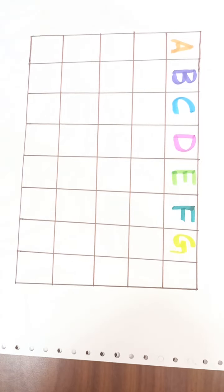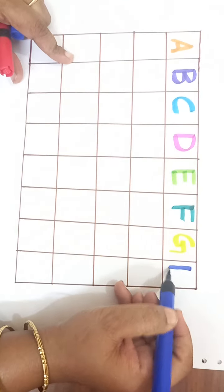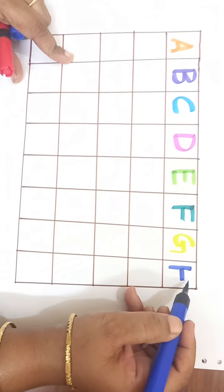Yellow color. G. G for gun. G-U-N, gun. Blue color. H. H-U-T, gun.